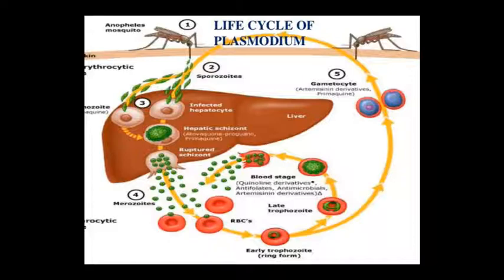When blood cells are filled and ruptured, the Plasmodium infection spreads. Male and female gametes are made in our peripheral blood. At this stage, primaquine or artemisinin derivatives can be given. When in our peripheral blood, the mosquito will bite again, go into the liver, and complete the life cycle. The mosquito is the definitive host and the human is the intermediate host.